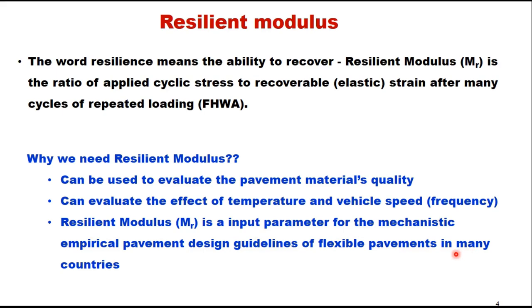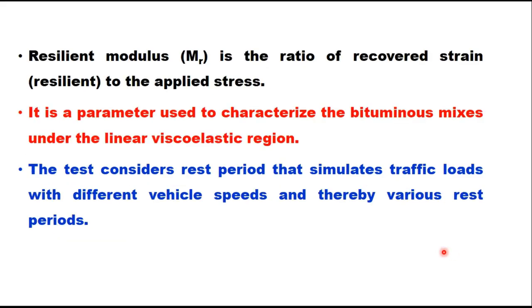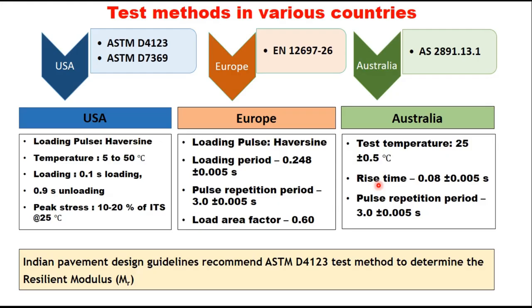IRC 37 also makes use of resilient modulus in the design of pavement. It is the ratio of recovered strain to the applied stress and is used to characterize the bituminous mixes under the linear viscoelastic region. The test procedure considers rest periods that simulate traffic loads with different vehicle speeds, and there are three methods which are popular in different countries.